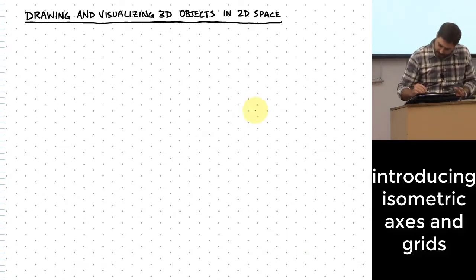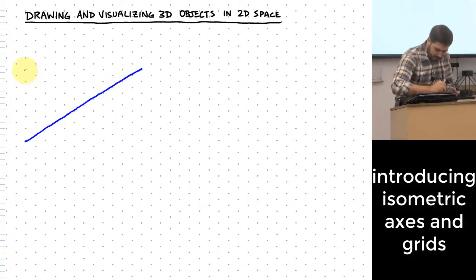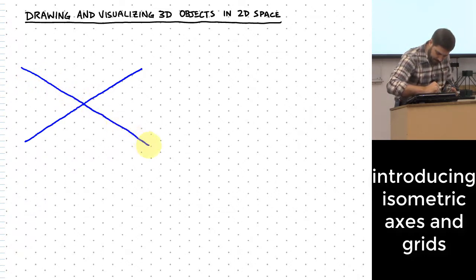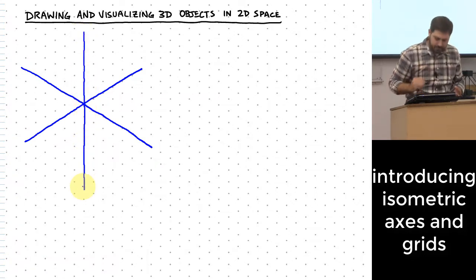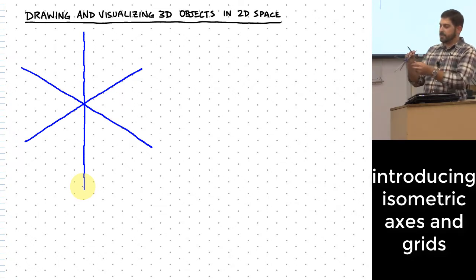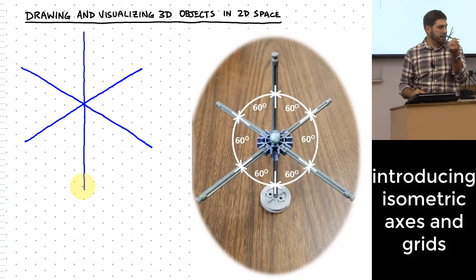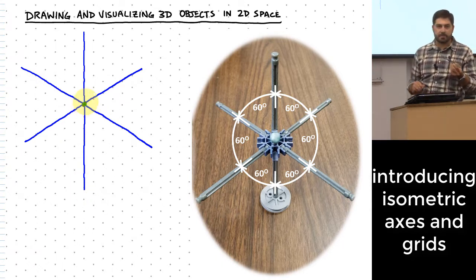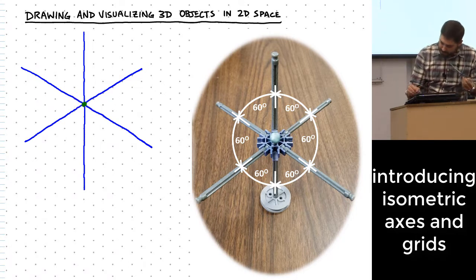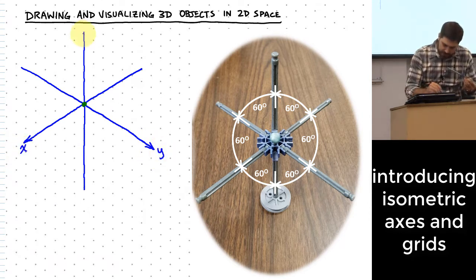If I take a line and draw it from here up to here, then draw another line going down along those dots, and then another line going down this way — what you'll see on the page is basically the same thing you saw when you looked right down the green axis. I could label these: maybe this is the X direction, this is the Y direction, and this is the Z direction.